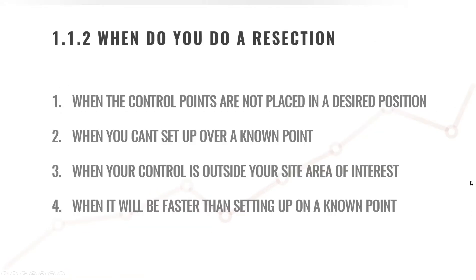When do you do a resection? We do a resection when control points are not placed in the desired position, or when we simply cannot set up over a known point. When your control is outside of your site and area of interest, that's a good time to do a resection. Or when it will simply be faster to do a resection than setting up over a known point — this is the case on a number of occasions.